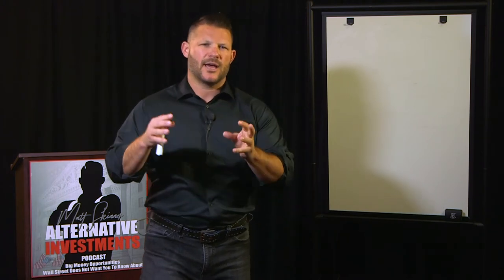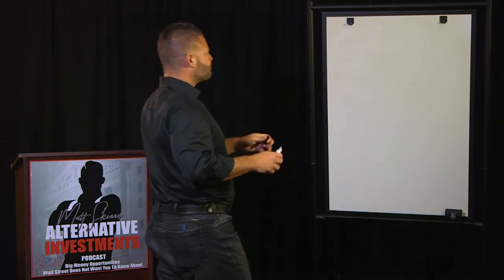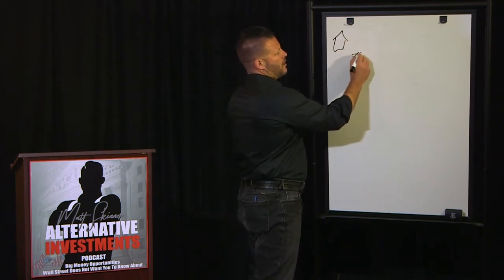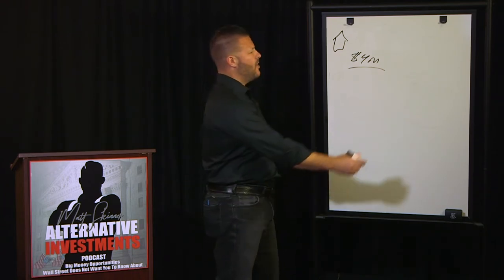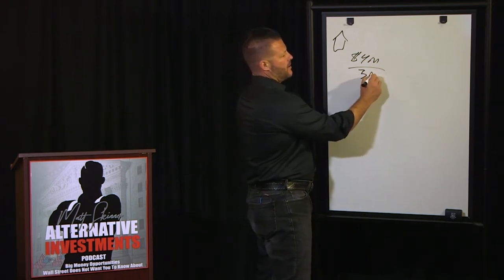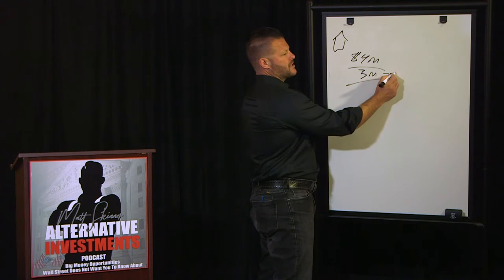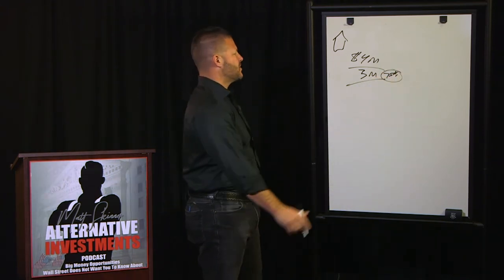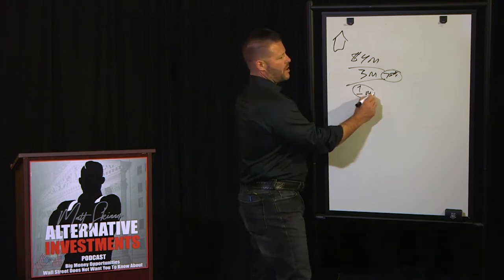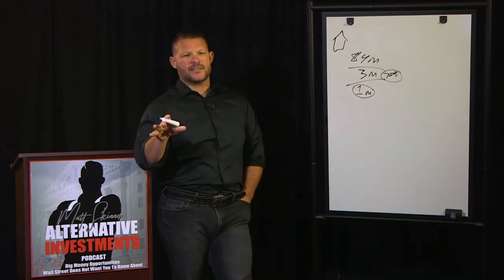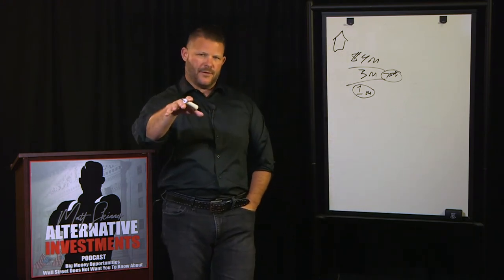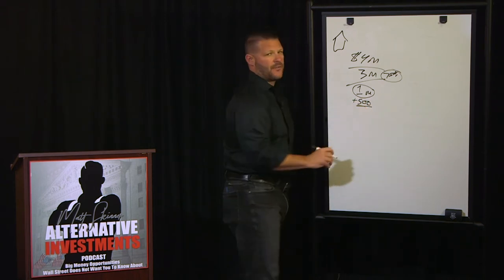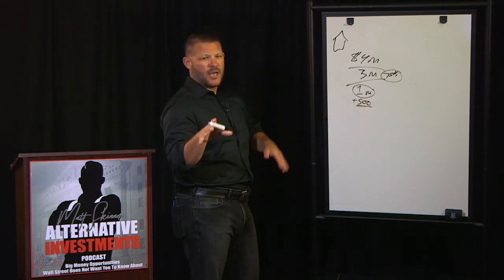Let me show you how this compound equity works. First, we use this example: we buy an apartment complex for $4 million. I go to the bank and they give me a $3 million loan — that's a 75% loan-to-value on my apartment complex. That means I'm required to come in with $1 million as a down payment.